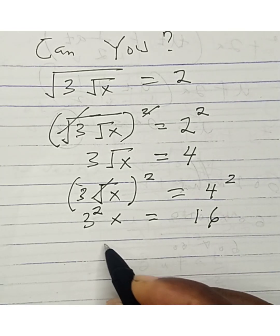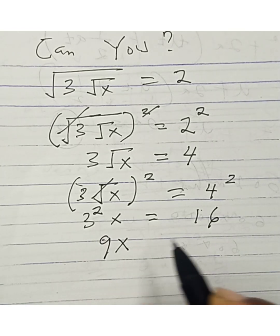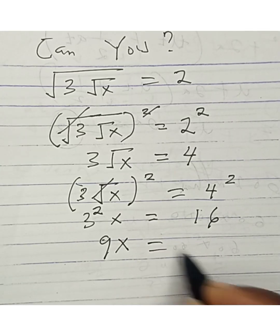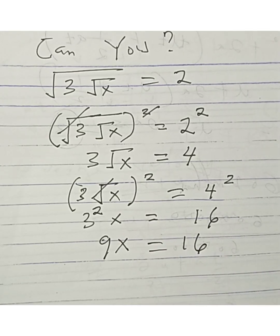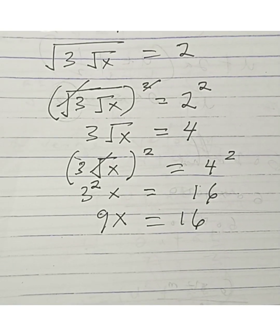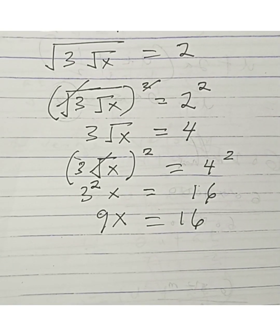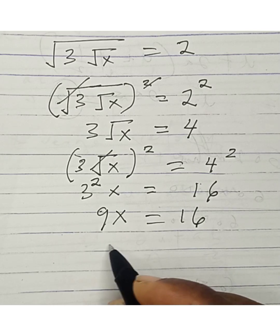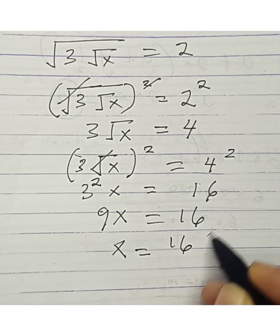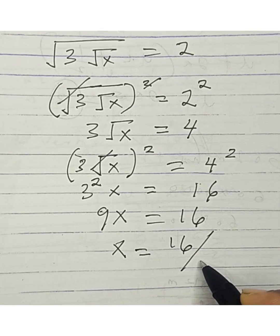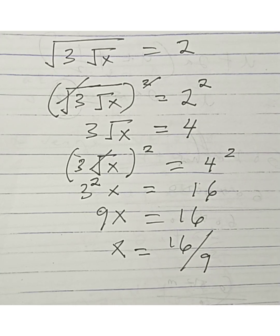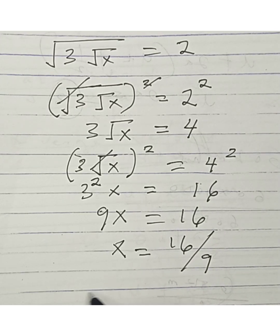So what do we have here: 9x equals 16. Since 9x equals 16, we have x equals 16 over 9. That is the value of x. Now let's check.